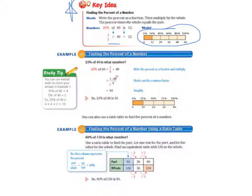Now let's start on example 1. Finding the percent of a number. So 25% of 40 is what number? 25% of 40 equals one-fourth. So when you change 25% to a fraction, it's one-fourth. And we multiply that times 40. So one-fourth times 40, we divide out the common factor. So that's the cross-cancelling. And when we do that, we end up with 10. So 25% of 40 equals 10.